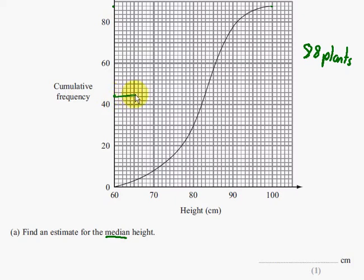So get your ruler at 44. The 44th plant, we're going to estimate up to our cumulative frequency curve, and down. And I'm going to say that is 83. So I think that the 44th plant is 83 centimeters. Now this is worth one mark, and I'll have a look at the mark scheme to see what it says. So anything from 82 to 83 would have got you the first mark.